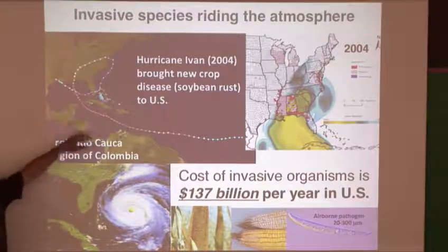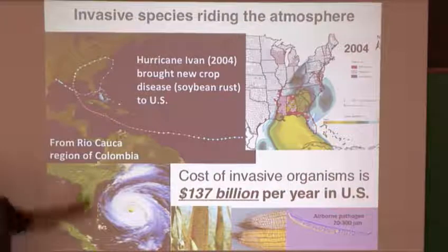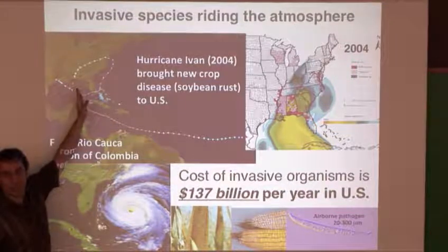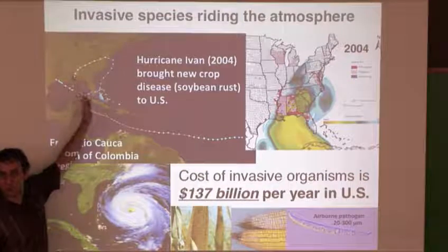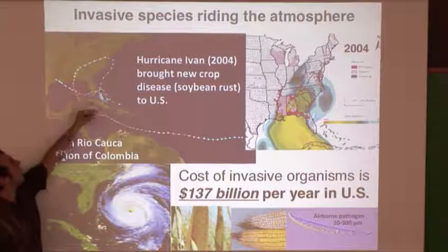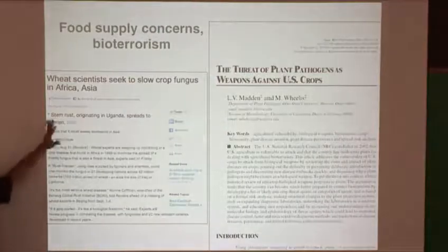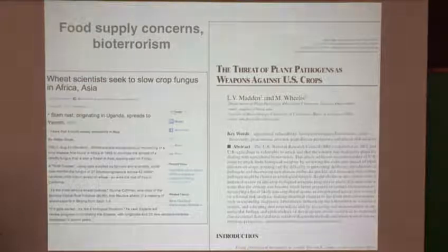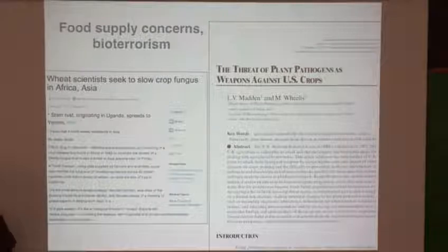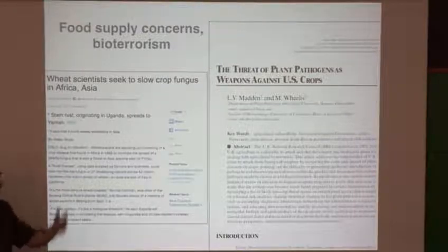Soybean had been grown for decades in the US without any problem. More recently there's a disease affecting citrus in Florida, and there are big worries about that disease spreading to California orange groves. There are also concerns about food supply and bioterrorism — someone could calculate where's the best place and time to release a disease and wipe out wheat.